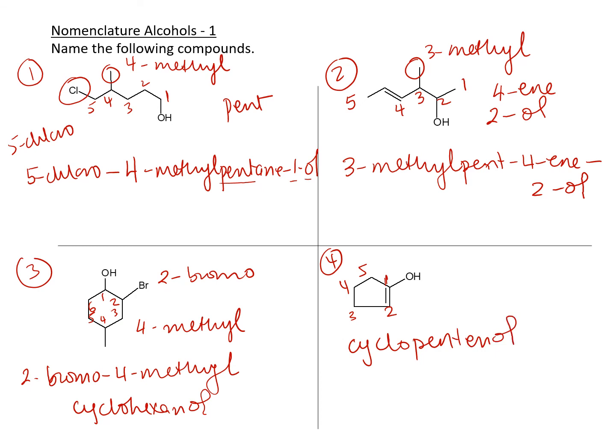You don't have to number anything over here because in this case, your alkene and alcohol are the same carbon. So it's understood they're both going to be 1.